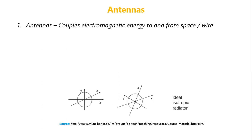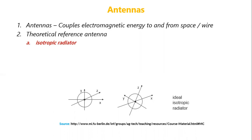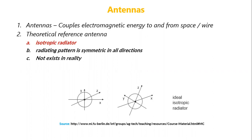The theoretical reference antenna is called an isotropic radiator. It radiates a pattern that is symmetric in all directions — it radiates equally in all directions. But this is not a real antenna. No such antenna exists in the real world that transmits symmetrically in all directions. So this is just a theoretical reference antenna and does not exist in reality.